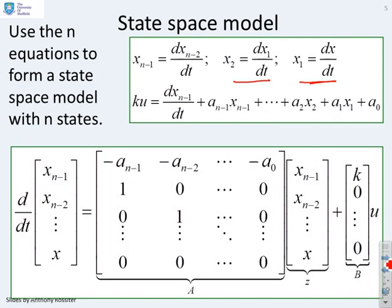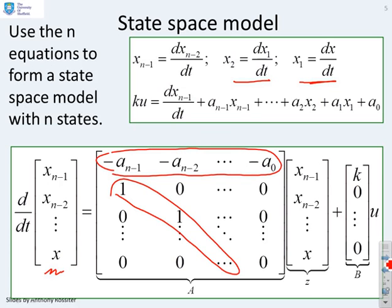Then by inspection, we can write down a state space representation for this differential equation as follows. You'll see we've defined a state as having x dx dt, d2x dt squared and so on up. We've defined the A matrix, which you'll see has got these ones in the lower diagonal. And then it's got the coefficients on the top row. And you'll notice the pairing. The A0 goes with x, which is what you expect from here. The A n minus 1 goes with x n minus 1, which is what you expect from here.